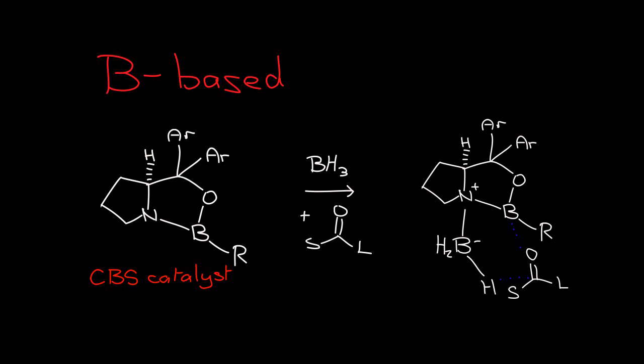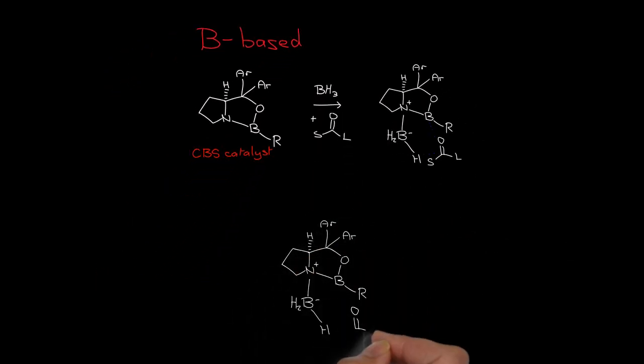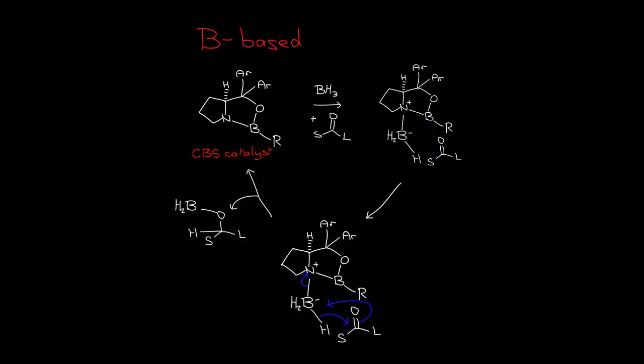That six-membered ring transition state then collapses and liberates a boronate ester, which eventually is hydrolyzed.